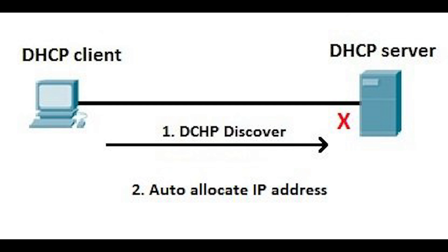The APIPA service also checks regularly for the presence of a DHCP server, so that if it detects one, the DHCP server replaces the APIPA networking addresses with dynamically assigned addresses. APIPA assigns the system an address in the 169.254.0.0 address range and configures a subnet mask of 255.255.0.0.